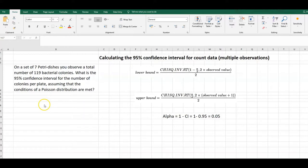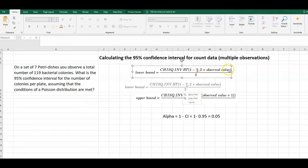All we really need for these equations are the alpha, the significance value, and the observed values. For the alpha, we can use the equation 1 minus confidence interval. So in this case, we want 95% confidence interval, so the alpha would be 1 minus 0.95, which is 0.05 or 5%.